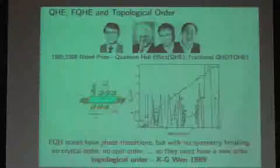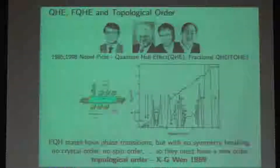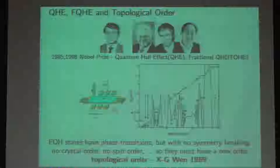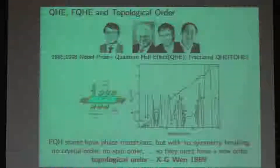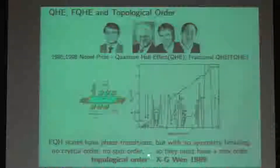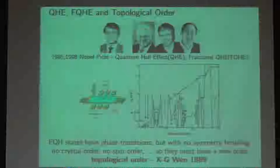In a symmetry-breaking sense, there is no way you can write down a Landau-inspired symmetry-breaking potential and define some order parameter to distinguish the phase. For example, in a ferromagnetic phase, magnetization can define an order parameter. But in quantum Hall systems, there is no crystal order, no spin order, no charge order. So there must be a new order — it's called topological order.